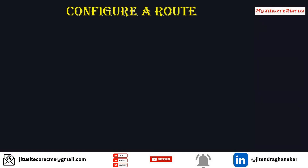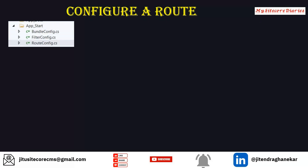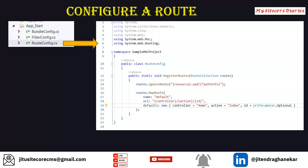Next, we will see how to configure a route. In the last video, we saw the App_Start folder — in that there is a file called RouteConfig. If you open that RouteConfig, you will see this kind of code, where in the RegisterRoutes method you will configure the route. For that you will use the RouteCollection class, and this class has an extension method called MapRoute, which will configure the route.